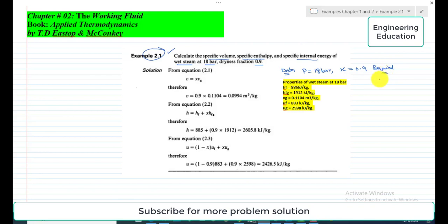specific volume (small v), second, specific enthalpy (small h), third, specific internal energy (small u). So these are the required quantities which we will find in this example.